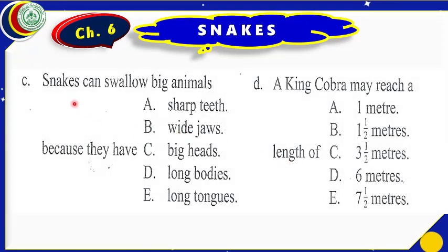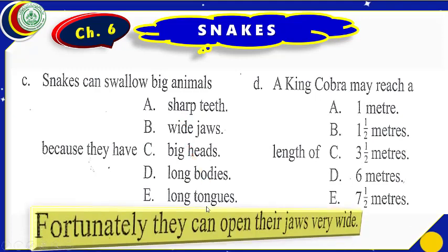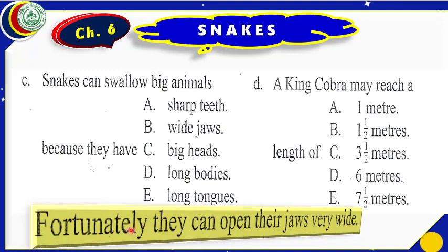Snakes can swallow big animals because they have — sharp teeth, wide jaws, big heads, long bodies, or long tongues? Let us look in the lesson: 'Fortunately, they can open their jaws very wide.' They have wide jaws — that will be our correct option.